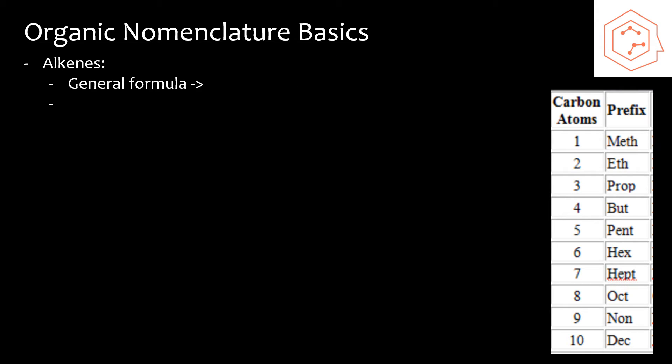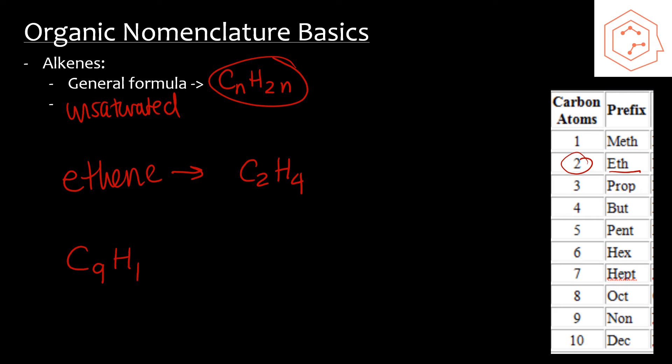Now let's talk about alkenes. Alkenes are hydrocarbons that have one double bond. These are unsaturated. Alkenes have the general formula CnH2n. Let's give an example. Let's say we have ethene—what is the formula? We look at the chart over here, we see that there's two carbon atoms, so it should be C2H4 if you input it into this formula. What about C9H18? That should be nonene.